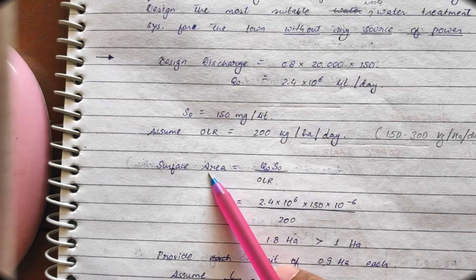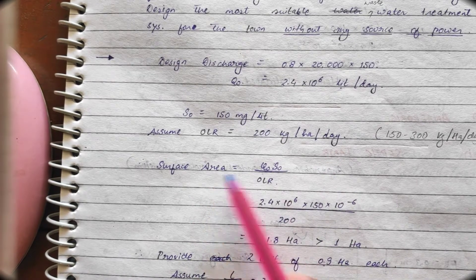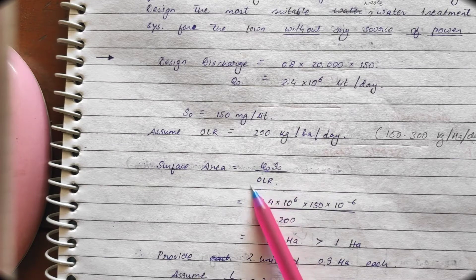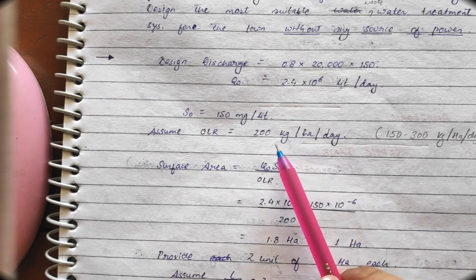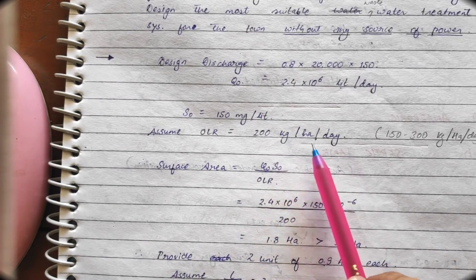From here, we can calculate the surface area. What is the formula for surface area? If OLR is given. Now, remember here. Now, OLR is given. Now, things are in kg hectares per day. So, remember this.